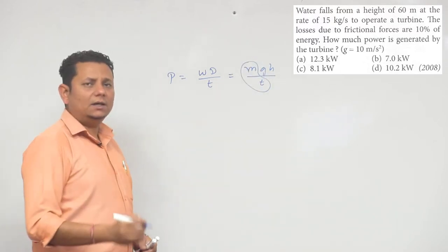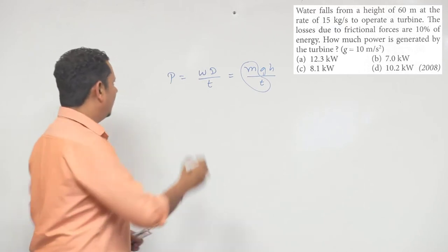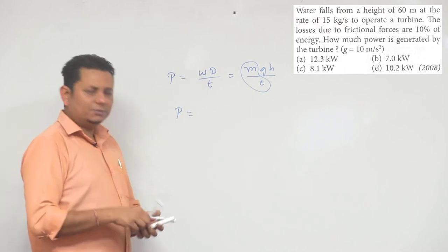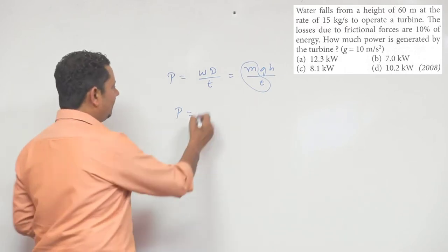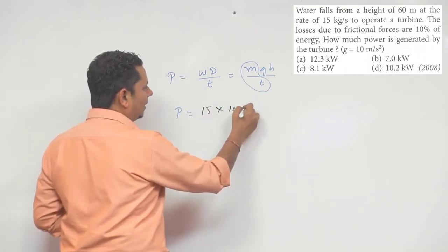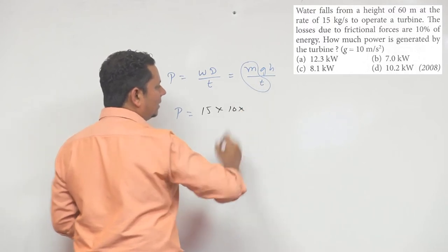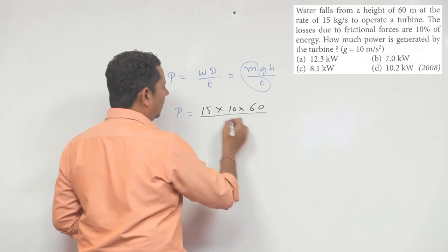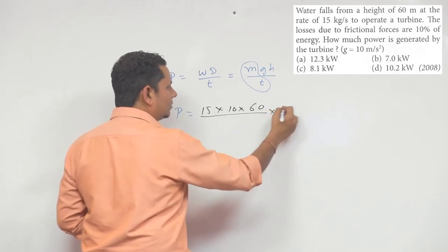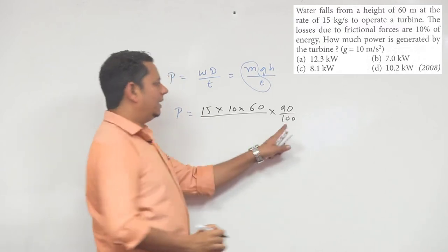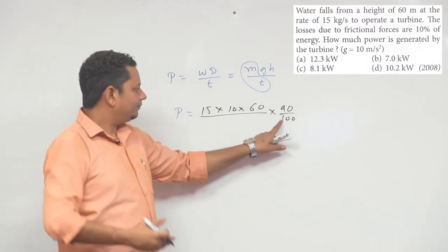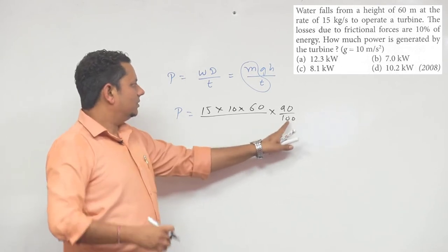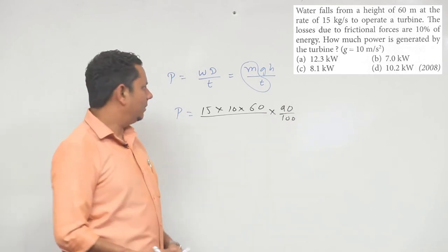The data given is 15 kg per second. So here we multiply by g times m, which is 10, multiplied by h, 60, divided by 90 for 90% energy. This is the power accounting for the 10% loss, so 90 percent of the energy per second.